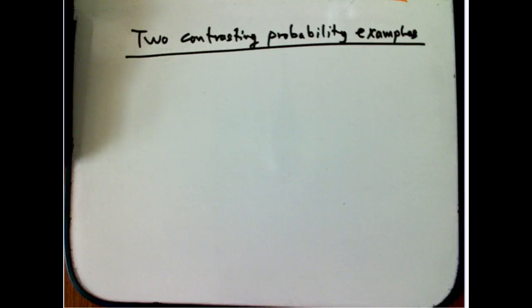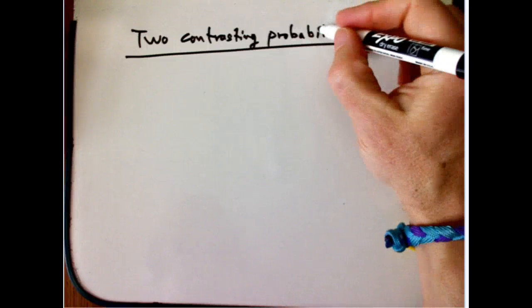Here are two contrasting probability examples to illustrate when you need to use order and when you can afford not to use order in a counting and probability problem.